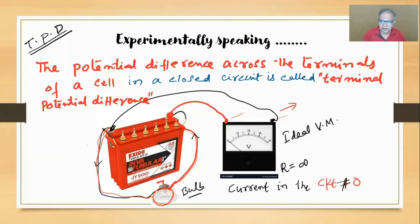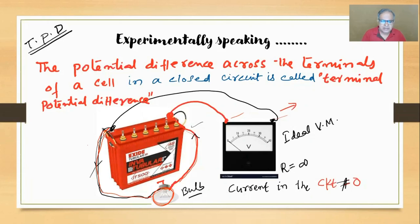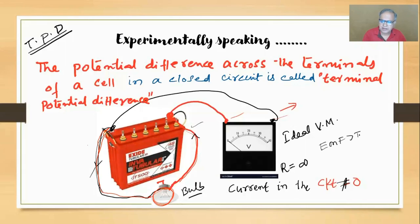Closed circuit means current is not zero - current is flowing. So whatever potential difference is appearing here is what you call terminal PD. In a particular case of one single cell, you can say that EMF will be greater than terminal potential difference.